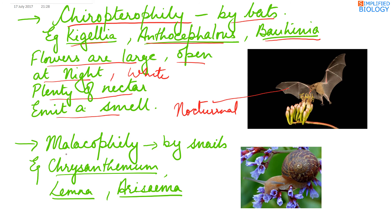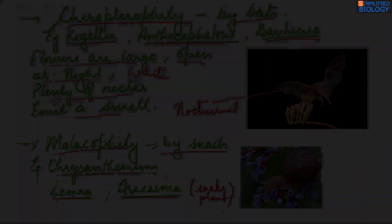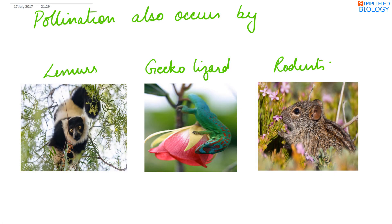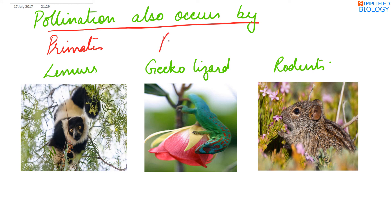Next, malacophily — pollination by snails. Seen in Chrysanthemum, Lemna, and Arisaema, commonly known as snake plant. Besides these, pollination also occurs by primates like lemurs, arboreal gecko lizards, and rodents.